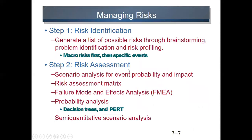The second step is Risk Assessment. For the risks we identified in step one, we analyze which risks have greater impact and which have a higher probability of occurrence — meaning which risk we may face more frequently, and which risk could be more dangerous. We can use a risk assessment matrix and FMEA — Failure Mode and Effect Analysis — for this purpose.